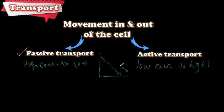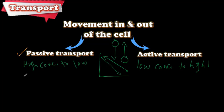It's like having a ball in your hand — if you want to drop it down, you don't need to use energy. But if you throw something from down to up, you need energy. So passive transport does not use energy, but active transport uses energy because it happens against the concentration gradient.